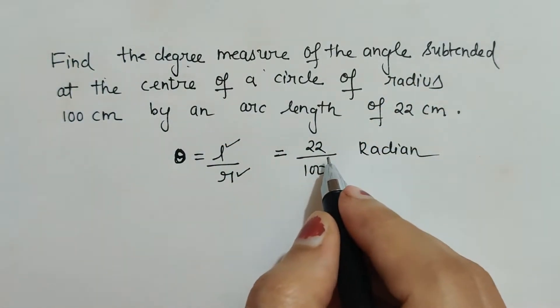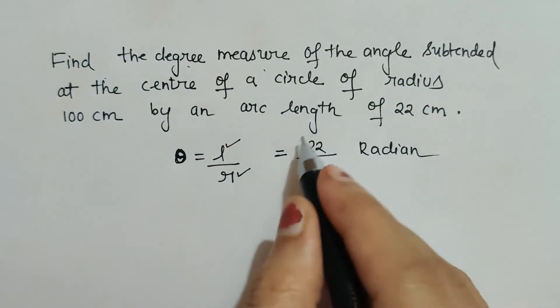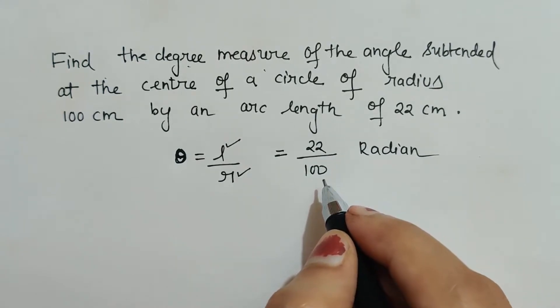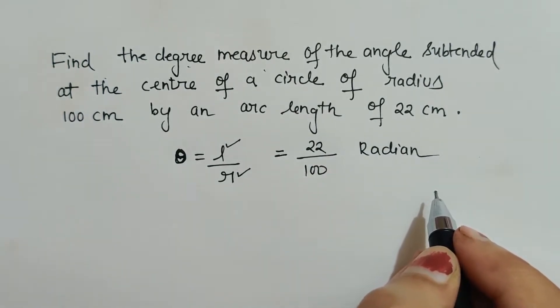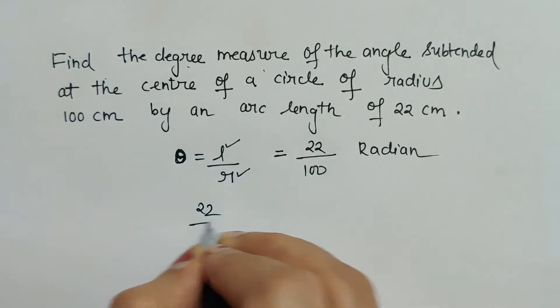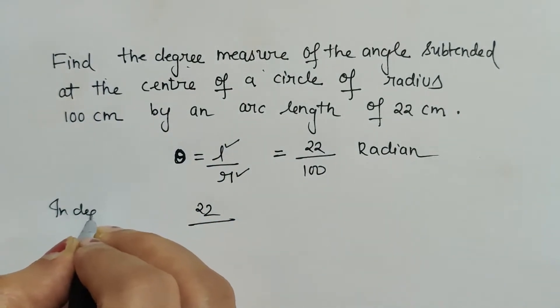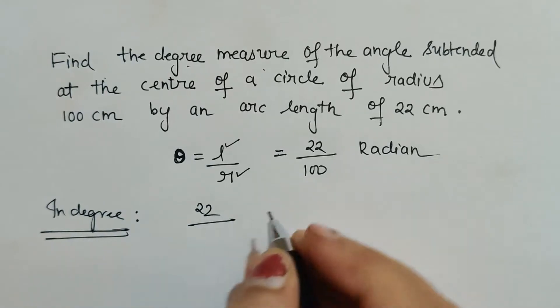Once we have any angle in radian and it is to be converted to degree, what we will do is multiply the given radian angle by 180 upon pi to convert it to degrees.